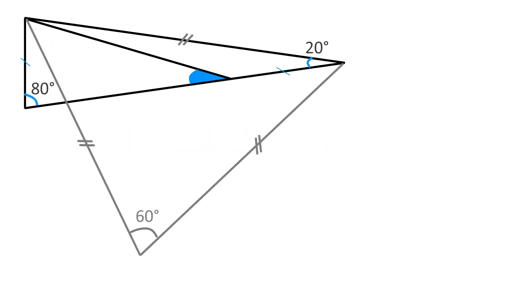Now, if we draw two lines here, forming an equilateral triangle, this gray angle would be 60 minus 20 equals 40 degrees.